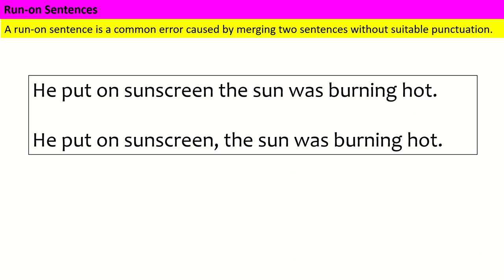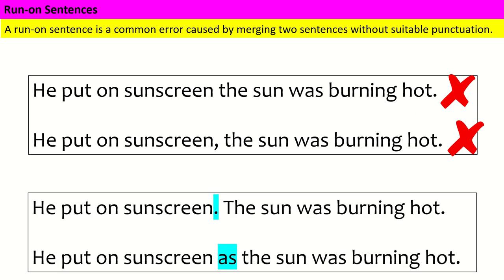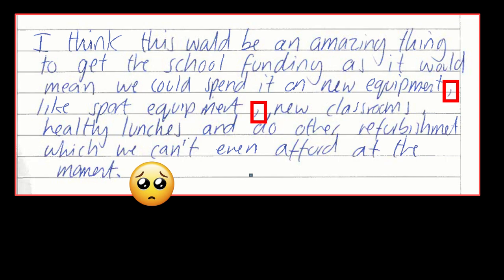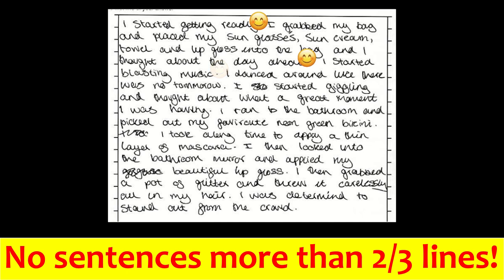Another example: 'He put on sunscreen, the sun was burning hot' — both with nothing and with a comma are wrong. You can write 'He put on sunscreen. The sun was burning hot.' or 'He put on sunscreen as the sun was burning hot.' I guarantee even students who get grade five and six do this. If you don't do it, your marks would go up significantly. An easy fix: if you've got a sentence that goes on three or four lines, go in, find where the full stop is needed, and put it in.